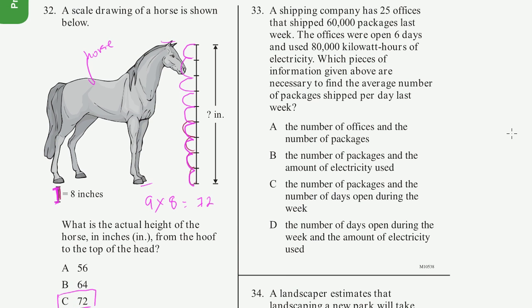Problem 33. A shipping company has 25 offices that shipped 60,000 packages last week. The offices were open 6 days and used 80,000 kilowatt hours of electricity. Which pieces of information given above are necessary to find the average number of packages shipped per day last week? So let's think about it. They didn't ask us anything about the electricity, so we definitely don't need that information.